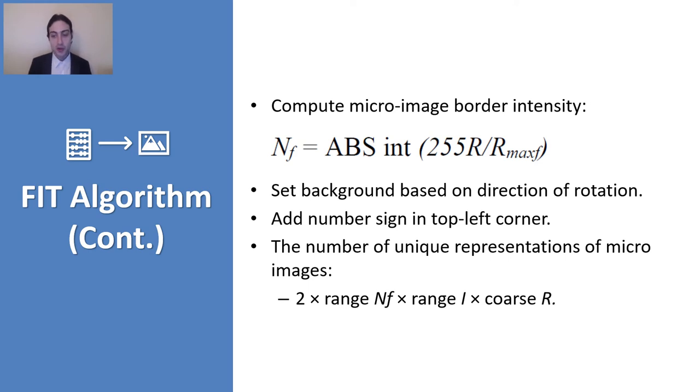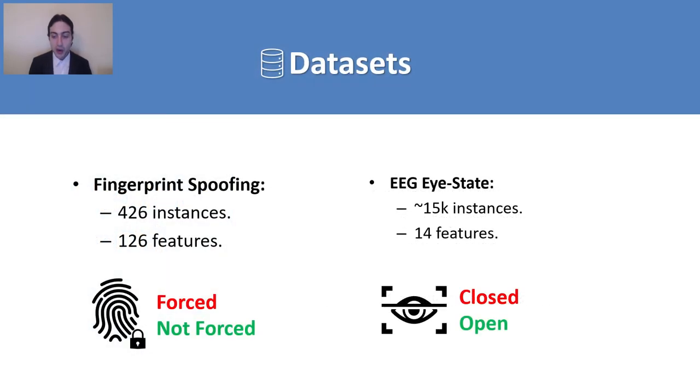And therefore, the final number of unique representations for every micro image would be 2 multiplied by range of NF, which we explained here, multiplied by range of R, of I, and the course of R.